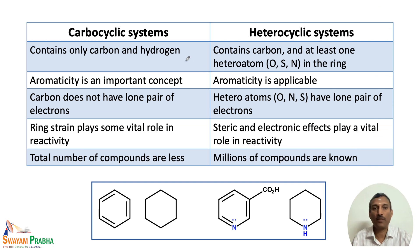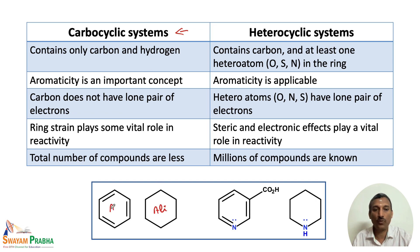Let us look at the comparison between carbocyclic and heterocyclic systems. There are three major classes: aliphatic, aromatic, and heterocyclic chemistry. Carbocyclic systems — which include both aliphatic and aromatic compounds — contain only carbon and hydrogen, with no heteroatom present either in the ring or as a functional group. In heterocyclic systems, at least one heteroatom — oxygen, sulfur, or nitrogen — is present in the ring. Aromaticity is an important concept for both carbocyclic and heterocyclic systems.